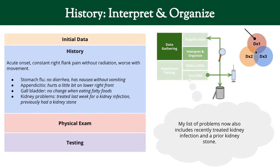Next we want to interpret and organize, getting data specific to our differential diagnosis. Is there anything that suggests stomach flu? When somebody has the stomach flu, they tend to have diarrhea — this patient said she didn't — and vomiting — this patient said they didn't either.